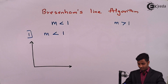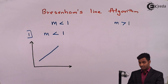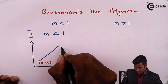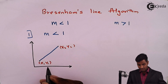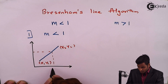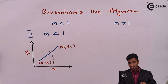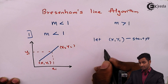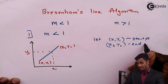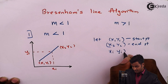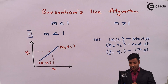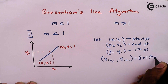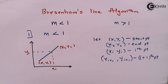Consider a line which will have some start point, named x1, y1. It will have some end point x2, y2, and it will have some ith point named xi, yi. Let x1, y1 be the start point on the line, x2, y2 be the end point, and xi, yi be the ith point on the line, and xi+1, yi+1 be the i+1th point on the line. These are the variables which are declared.